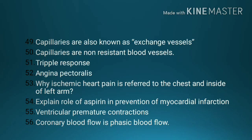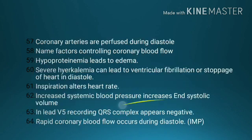Number 56, coronary blood flow is phasic blood flow. Number 57, coronary arteries are perfused during diastole. Number 58, name factors controlling coronary blood flow. Number 59, hypoproteinemia leads to edema. Number 60, severe hyperkalemia can lead to ventricular fibrillation or stoppage of heart in diastole.